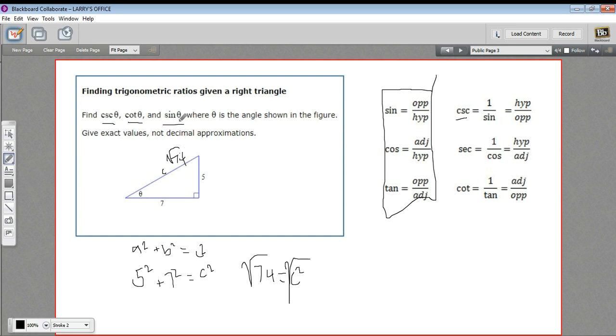Now, coming up with the answers to our problems here is really just filling in numbers in a fraction. So let's look at the cosecant. It is the hypotenuse over the opposite. So the cosecant of theta is the square root of 74 over the opposite of theta, which would be 5.